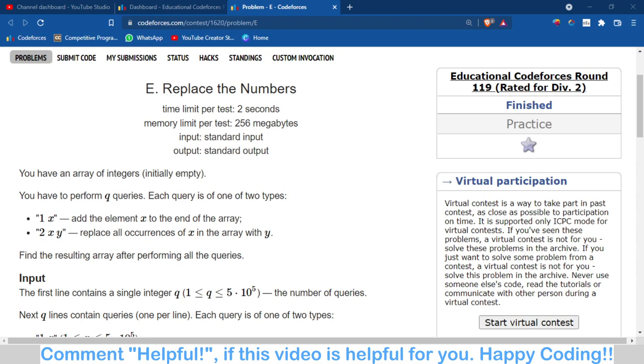First, let us understand the problem statement. The problem is that there are Q queries, and in each query there are two types. The first type is '1 X' which means you have to add element X to the end of the array. The second type is '2 X Y' which means you have to replace all occurrences of number X with Y.